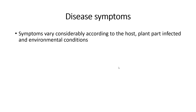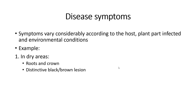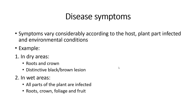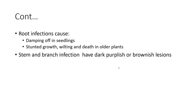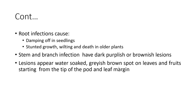Symptoms vary considerably according to the host, plant part infected, and environmental conditions. In dry areas, roots and crowns are infected showing distinctive black or brown lesions. In wet areas, all parts of the plant are infected — roots, crown, foliage, and fruit. Root infections cause damping off in seedlings and stunted growth, wilting, and death in older plants. Stem and branch infections show dark purplish or brownish lesions. Lesions appear water-soaked, grayish-brown spots on leaves and fruits starting from the tip of the shoot and the leaf margin. Infected fruits become soft and seem to melt away.